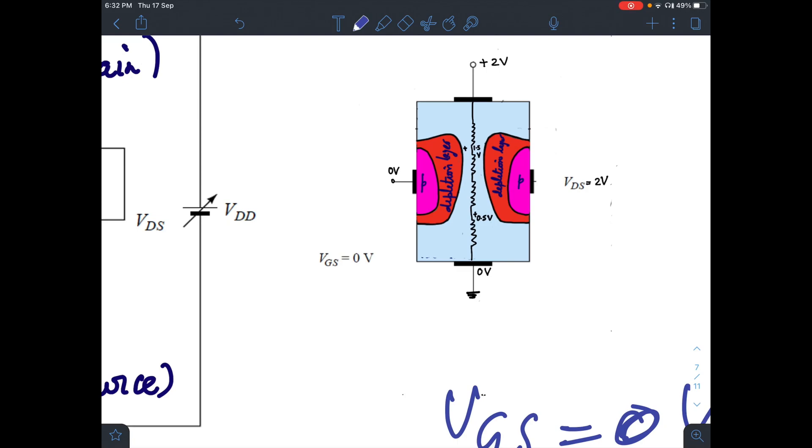You can divide this channel as if it consists of small resistances. If 2 volt is applied here, this will be more reverse biased, say for 1.5 volt, and this lower point will be less reverse biased. More reverse bias means wider depletion layer, so this will be wider towards this end.